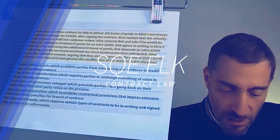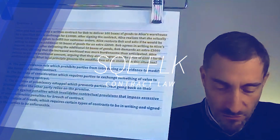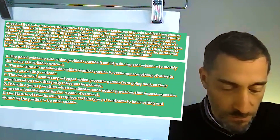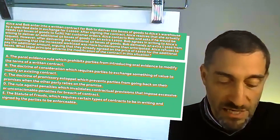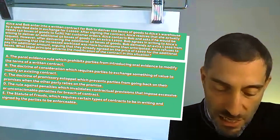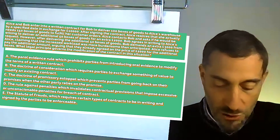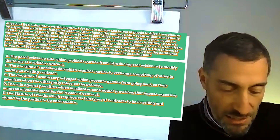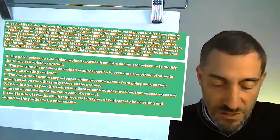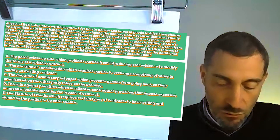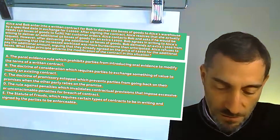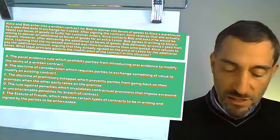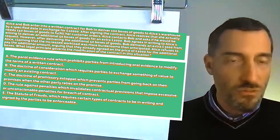Alice and Bob have entered into a written contract for Bob to deliver 100 boxes filled with goods to Alice's warehouse by a specified date in exchange for £10,000. After signing the contract, Alice realizes that she actually needs 150 boxes to fulfill her own customer's orders. Alice contacts Bob and asks if he would be willing to deliver an additional 50 boxes for an extra £2,000.